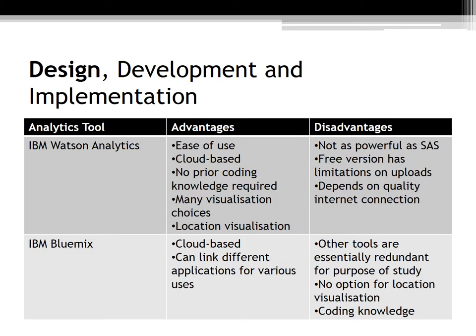In terms of deciding which analytical tool to use, Watson Analytics was clearly a better choice for this subject area. Firstly, ease of use for the average everyday user — no prior coding knowledge is required. It is also cloud-based, so it ticks the box for accessibility in terms of the CIA triad, meaning you can access it from home, office, or wherever. There are also many visualisation choices so you can view data best suited to your needs, and crucially, there is mapping or location visualisation, which is essential given the geographic nature of our data.